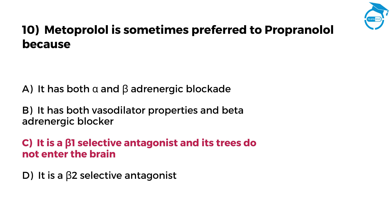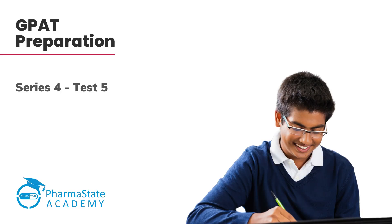The right option is C, that is it is a beta-1 selective antagonist and it does not enter the brain. Since you participated in all the questions of this GPAT preparation series for test number 5, we really appreciate your effort. We wish you all the best for your GPAT preparation. See you soon in the next GPAT preparation series video.